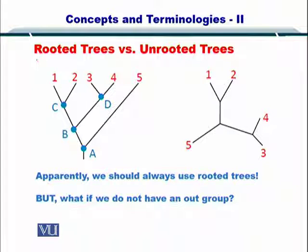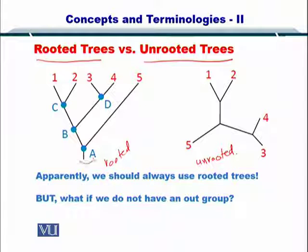So as I was just talking about the rooted and unrooted trees, here you see a rooted tree and here is the example of an unrooted tree. So in case of the rooted tree, you have A at the root while in this case you have nothing as a root.